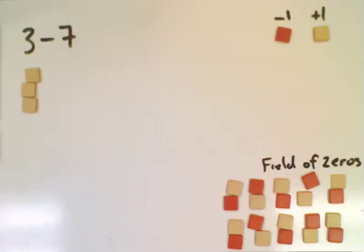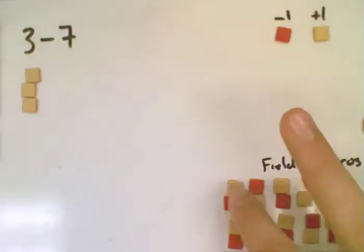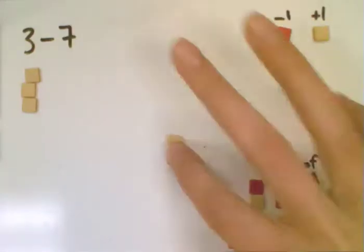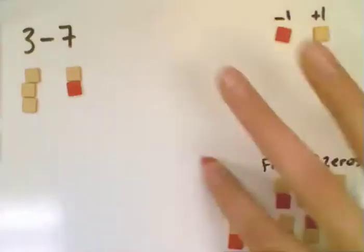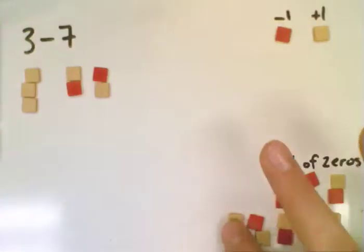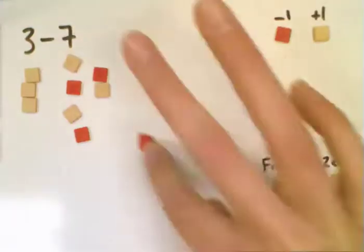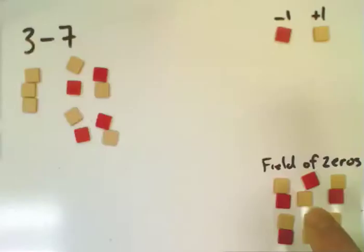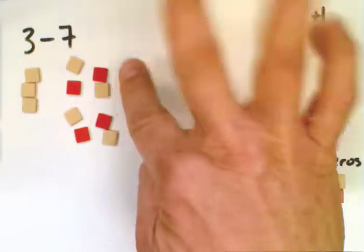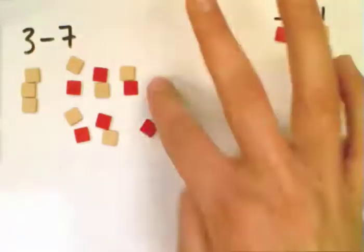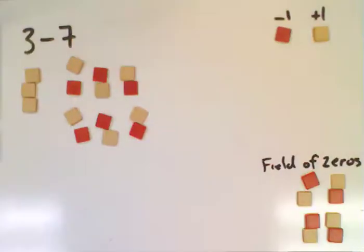And when we do subtraction in this form, we have to actually have 7 to subtract. And that's where we use our field of zeros on the right. In order to be able to subtract 7, there has to be 7 that we can subtract. And so by bringing in a field of zeros, and really you can bring in as many as you wish. So I'm going to bring in more than I need.